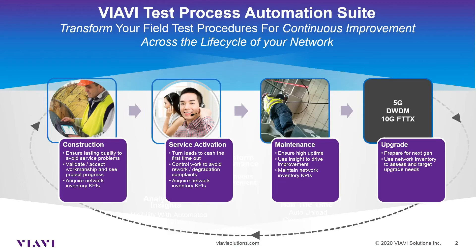When we consider the lifecycle, we consider four main phases. Number one: construction. During the construction phase we can't build it fast enough, but we don't want to give up on quality or compromise our quality. So we want to validate that workmanship is good, see the progress being made as we go along, and acquire KPIs as we build.